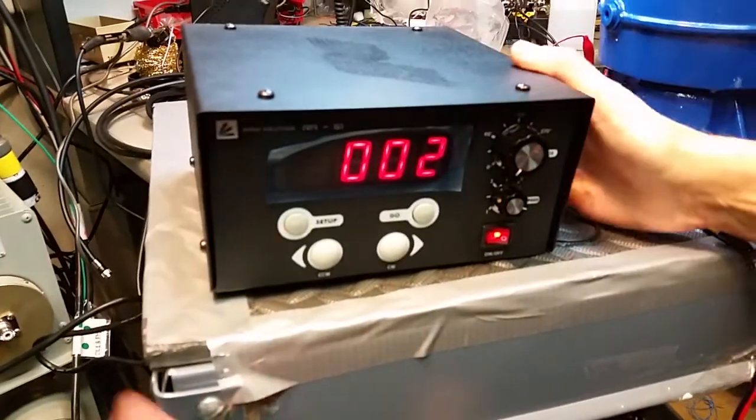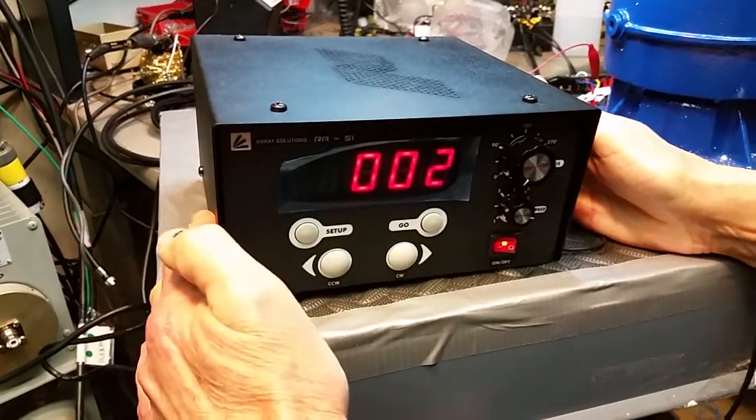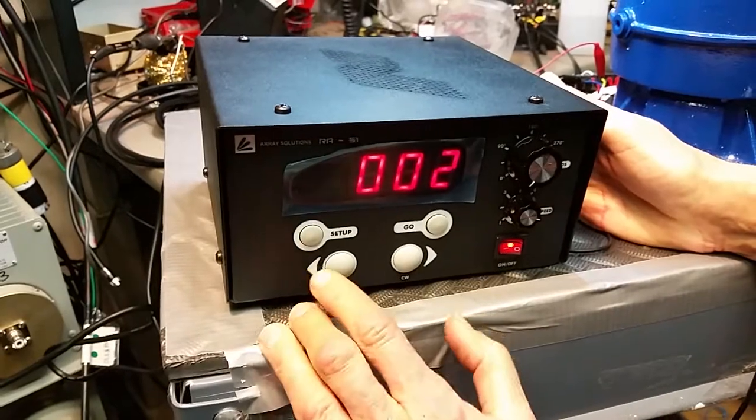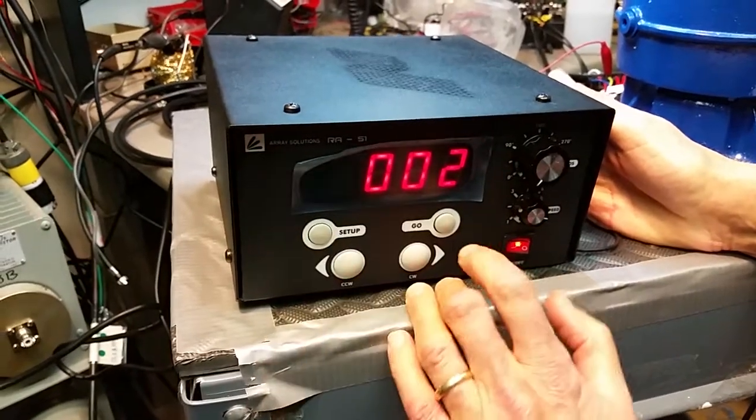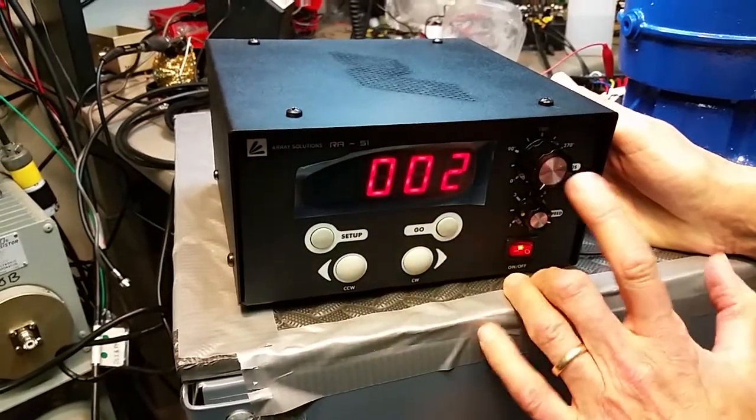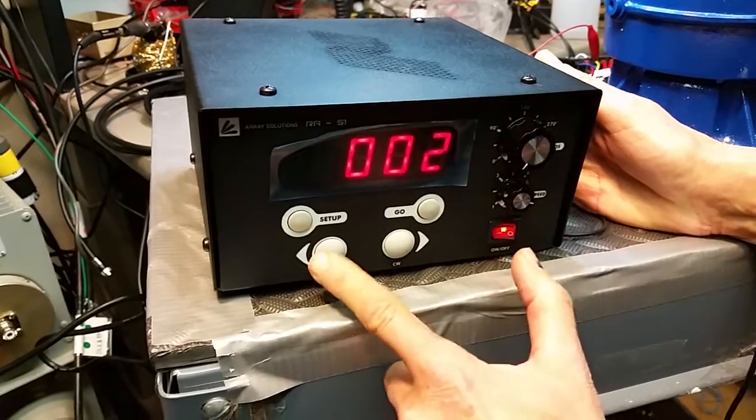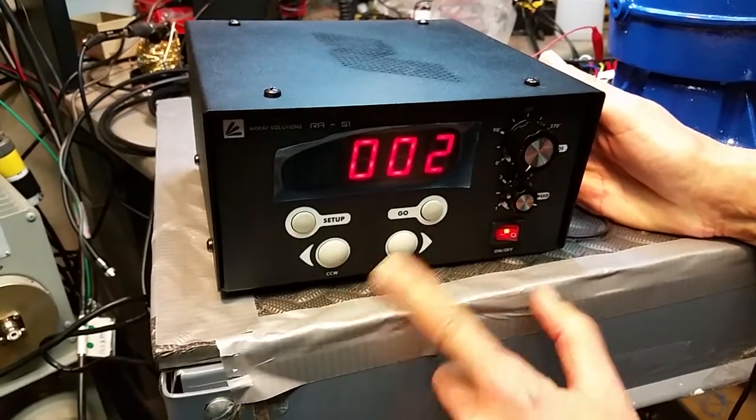The controller is an attractive box. It has several controls on the front. There's a setup button, a go button, a preset button. Of course you can manually move it clockwise or counterclockwise.